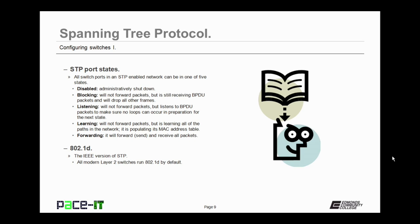The last state in Spanning Tree Protocol is the forwarding state. In this state, the port will forward and receive all packets that are flowing across the network that are directed to that port.